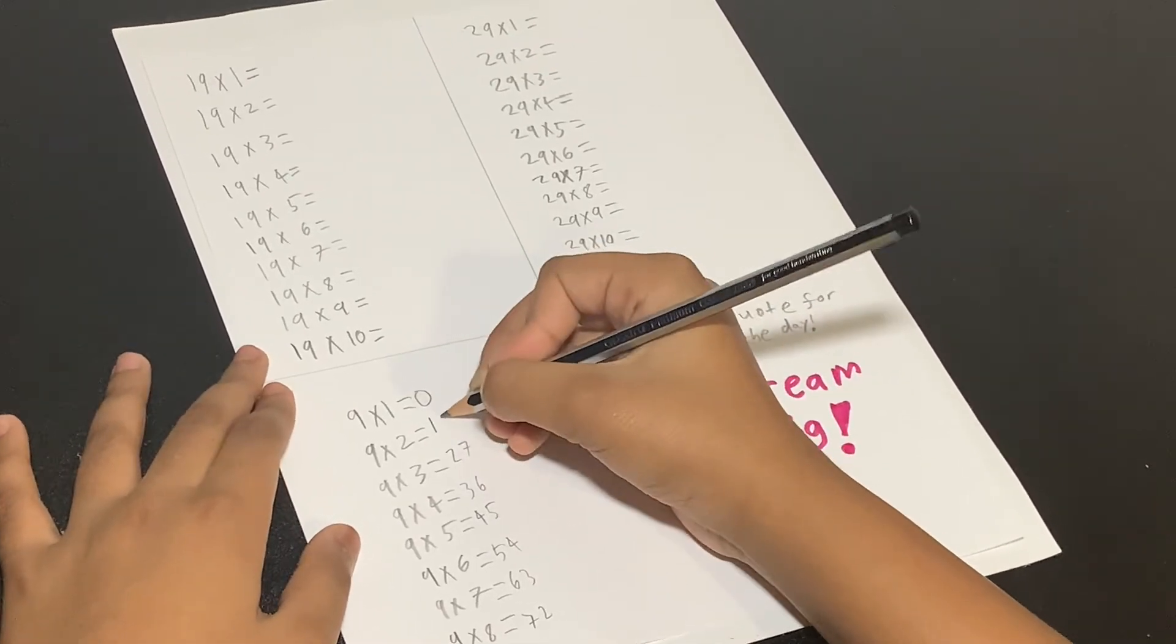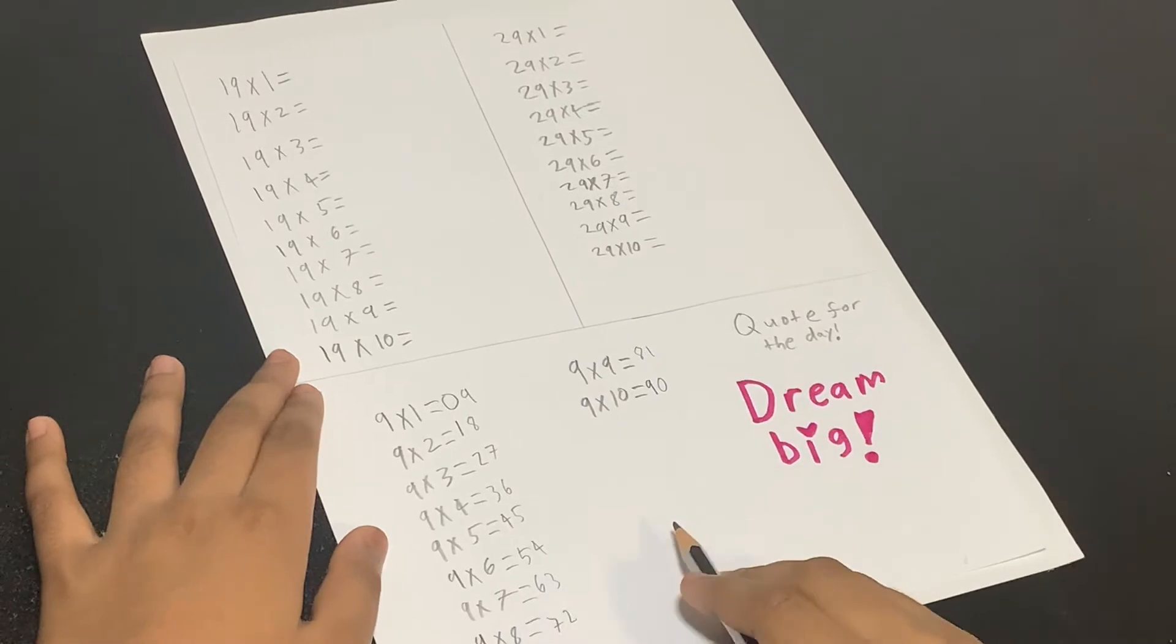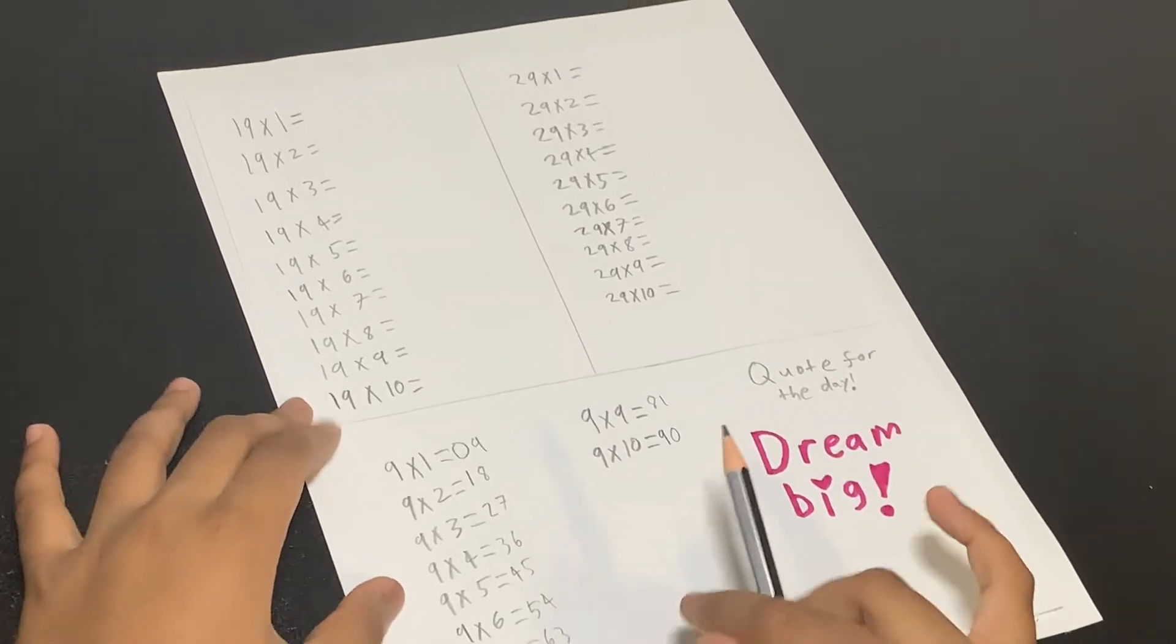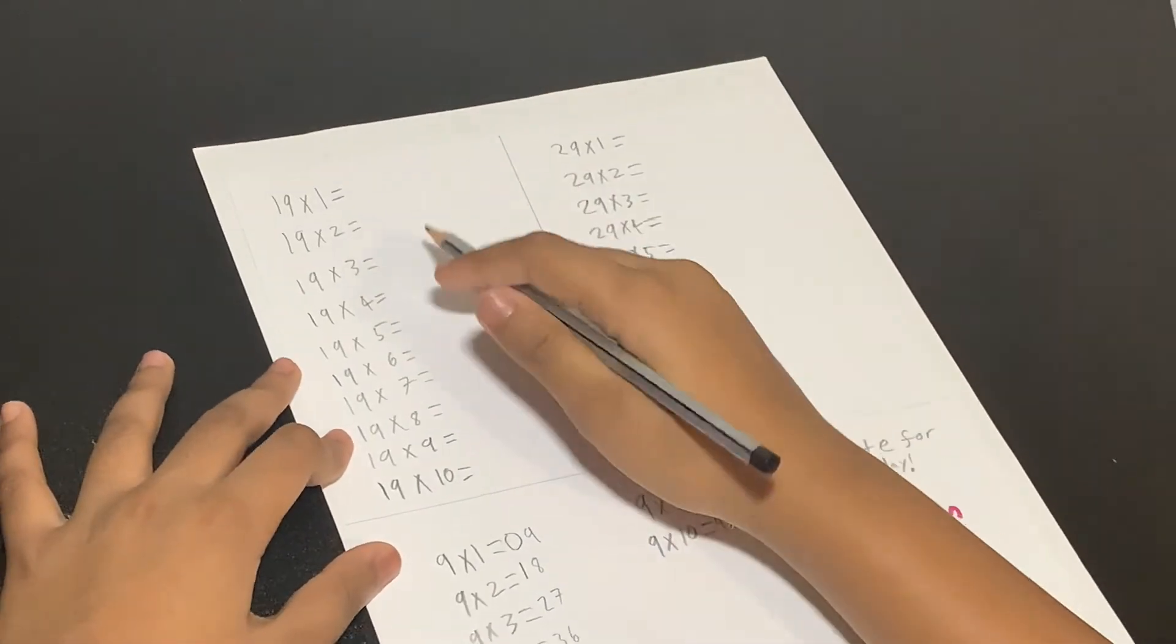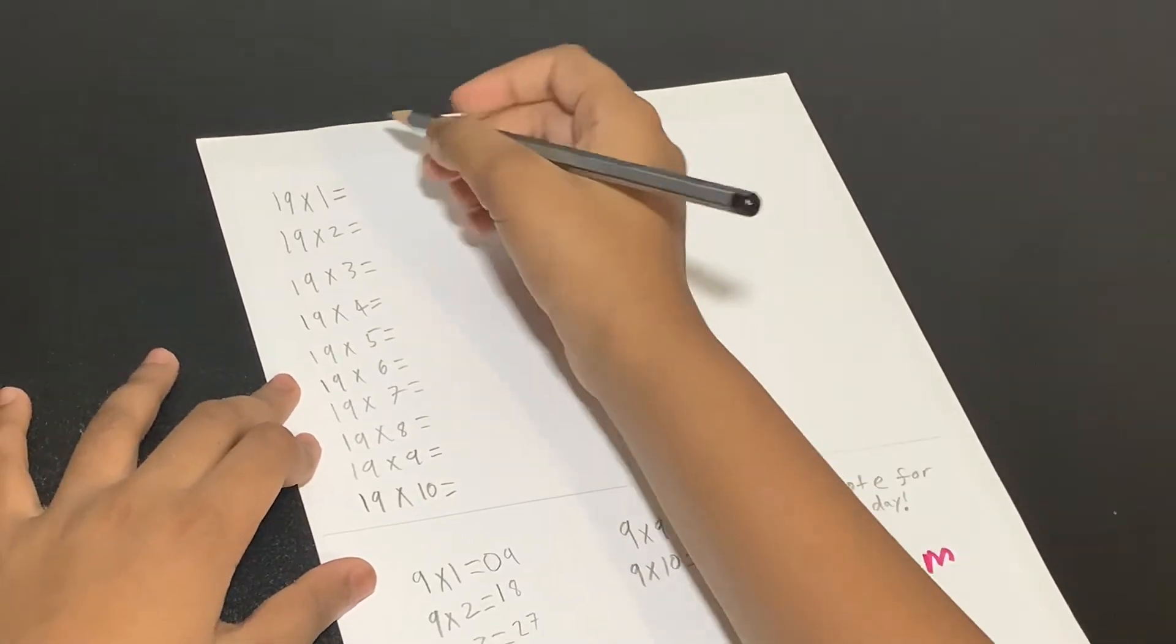7, 8, 9. There we go, our 9 times tables is done. Next we have our 19 times tables.